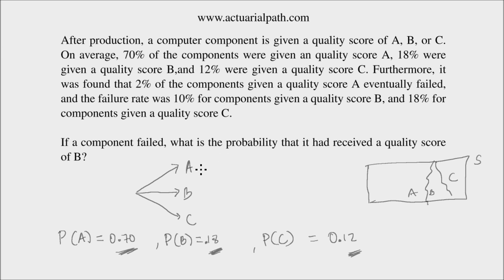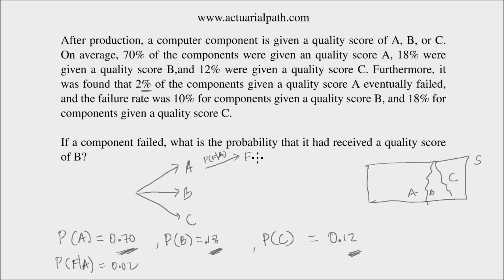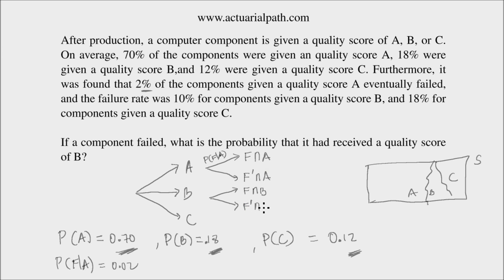Given a component is given a quality score of A, the probability of failing — so the probability of failing given a score of A — is 0.02, or 2%. This leads to the event F intersection A, or not failing and being given a score A. Given a quality score of B, it could fail, leading to F intersection B, or it could not fail: F complement intersection B.